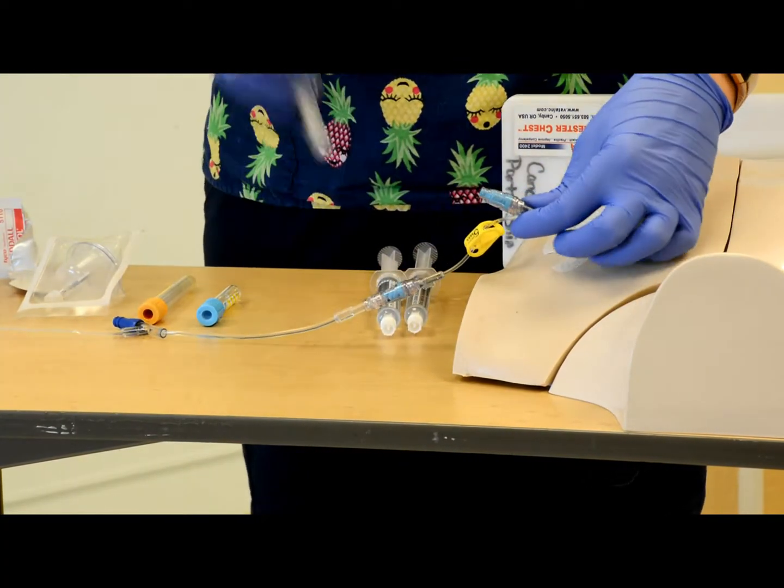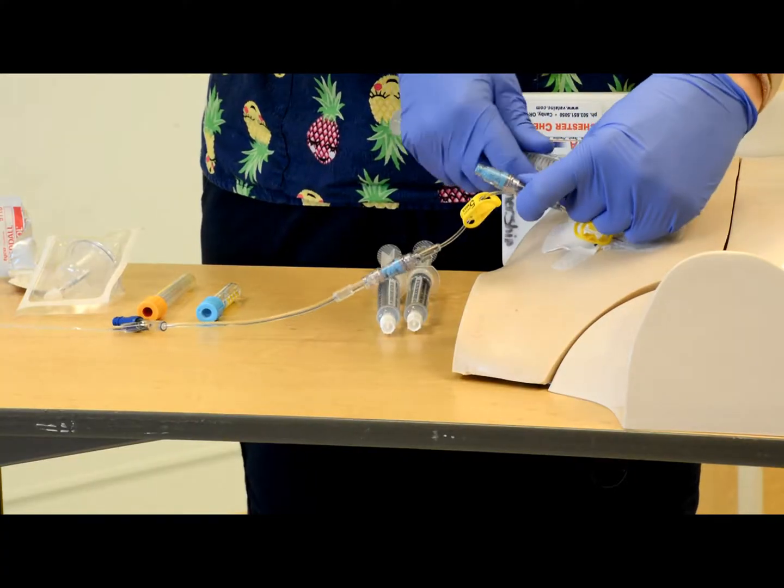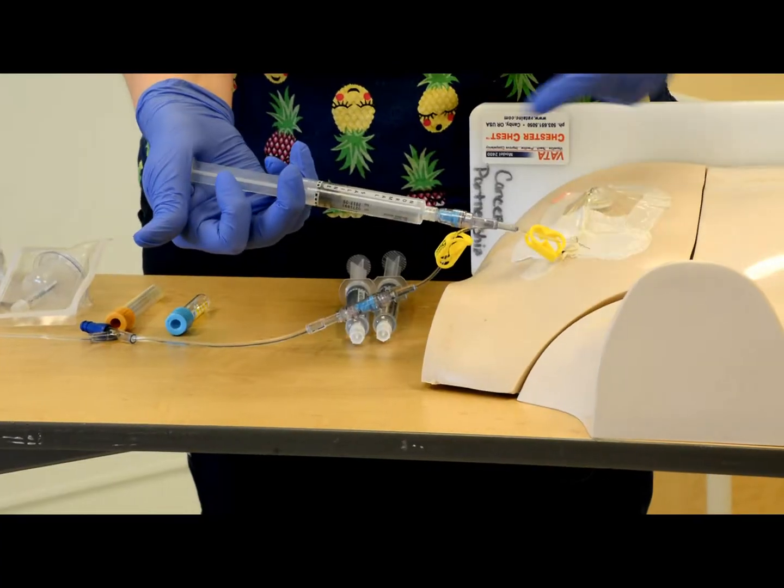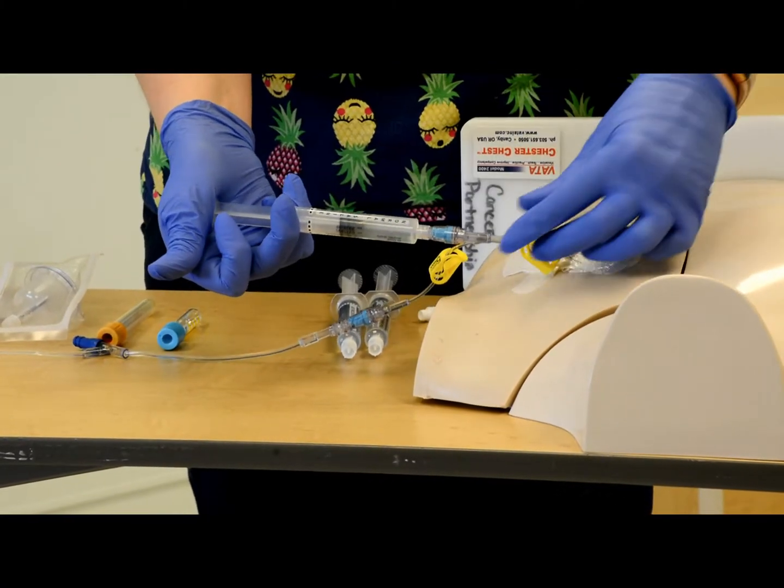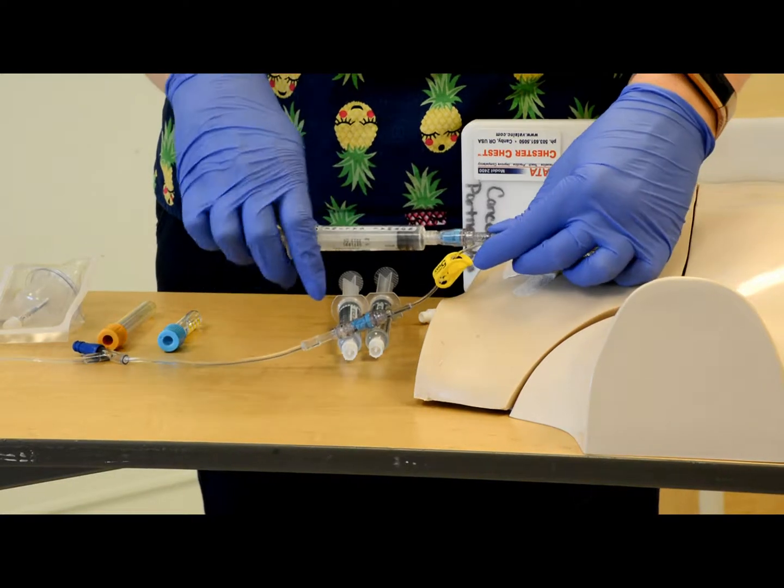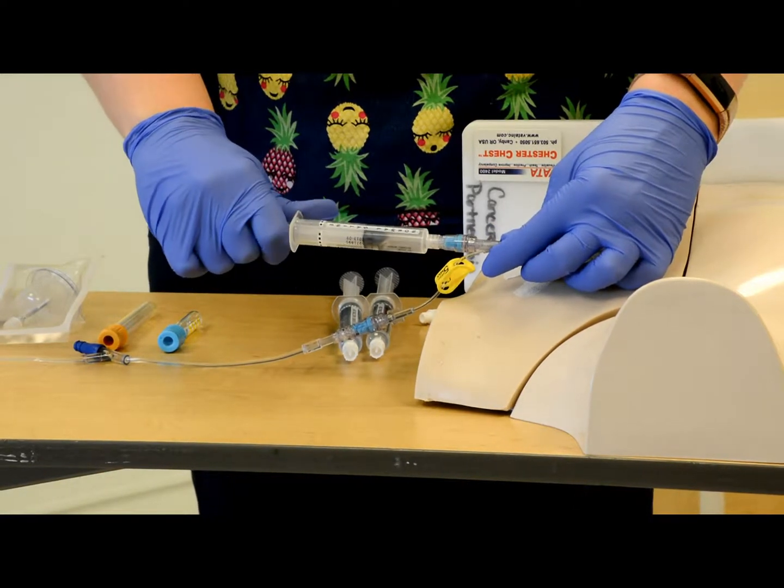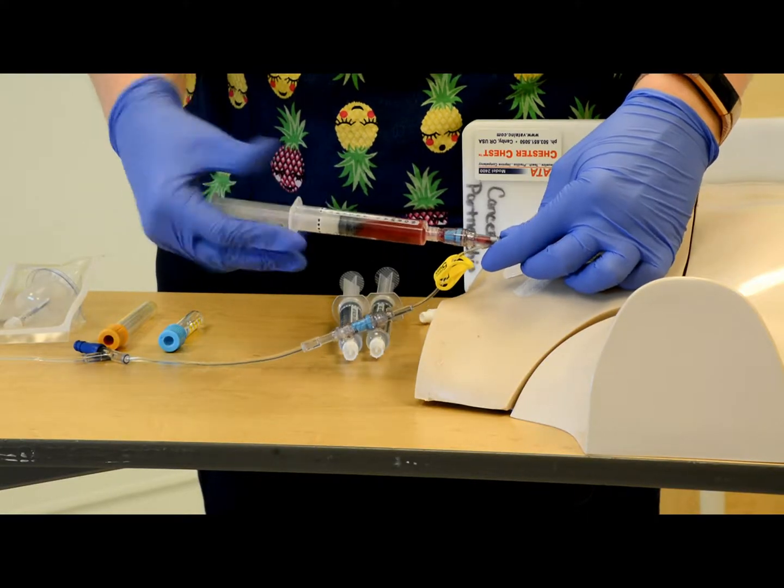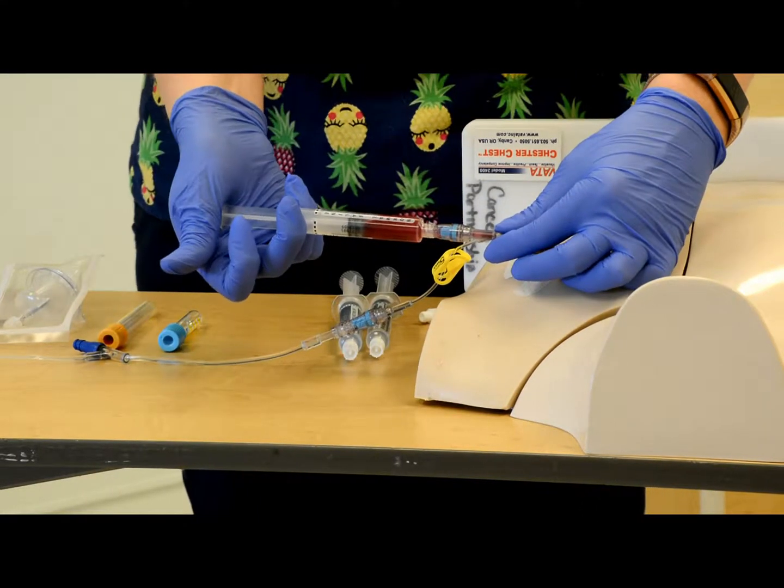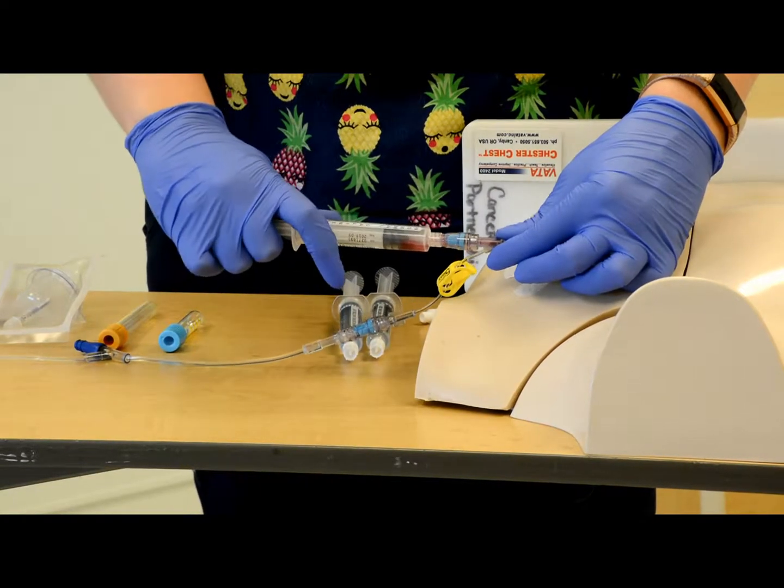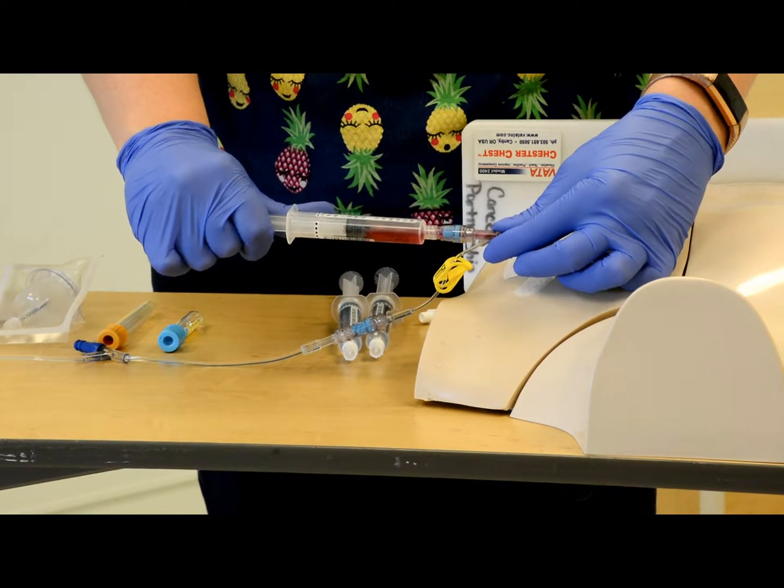Now using one syringe of saline, you're going to flush all 10 mls into the line. And then you're going to pull back and get 4 to 6 mls of blood return. And then in a fluid motion, you're going to push that in again, and pull back 4 to 6 mls.